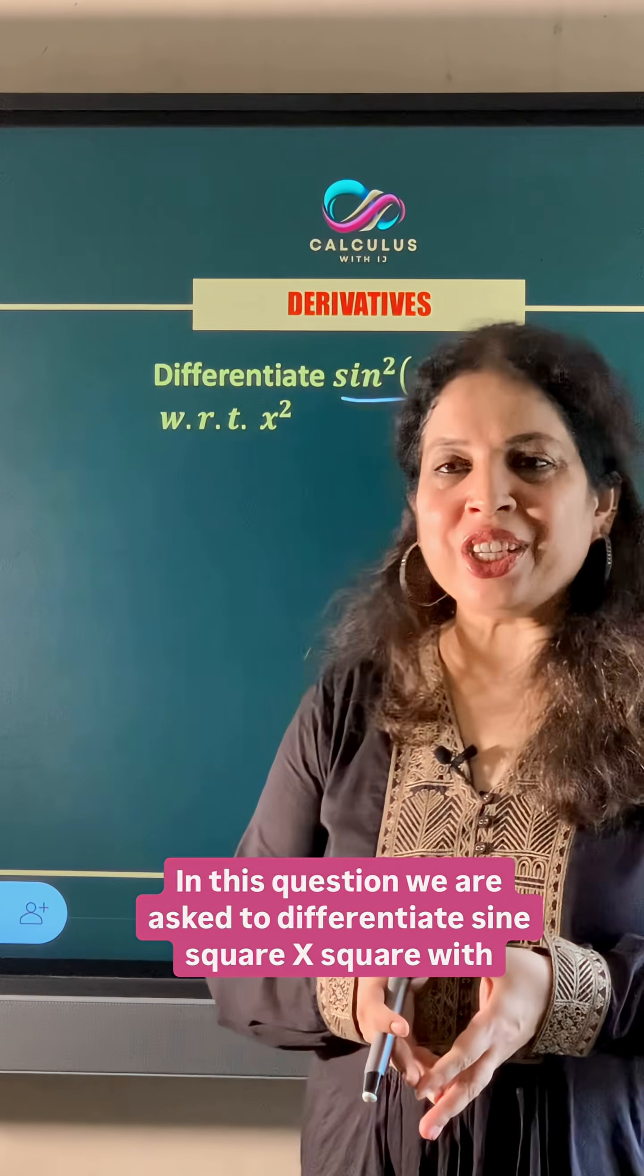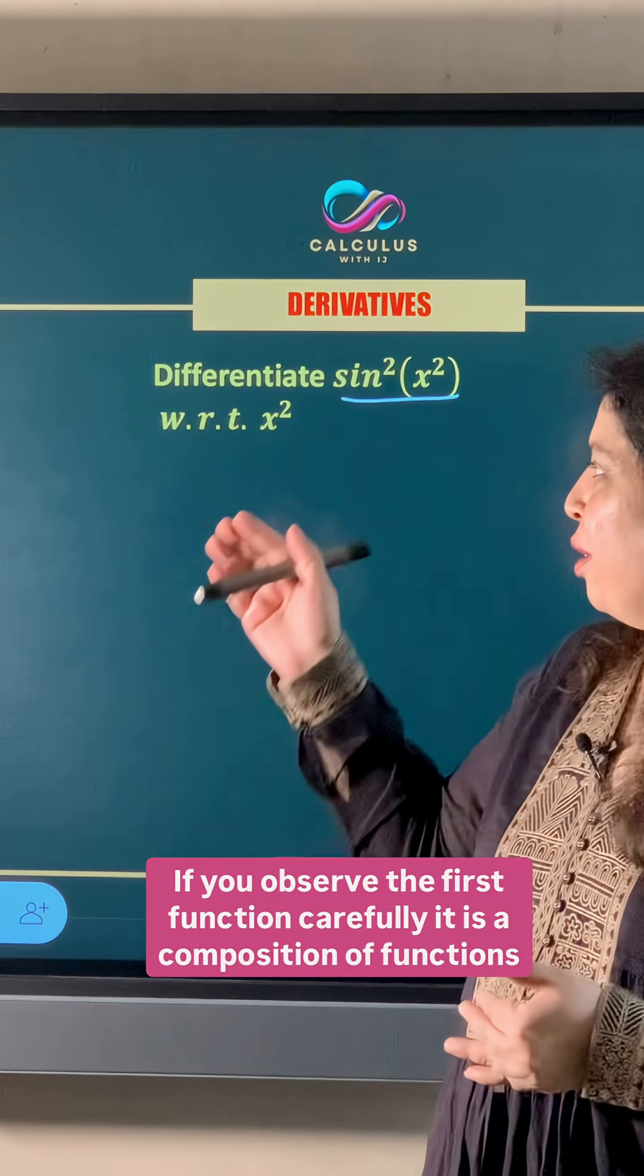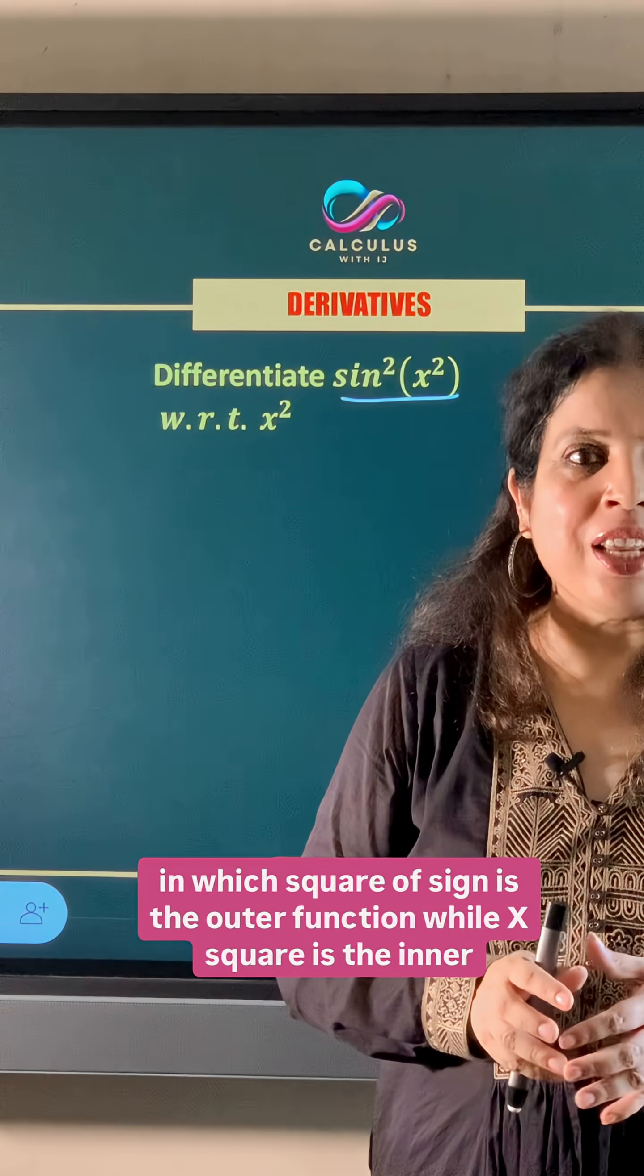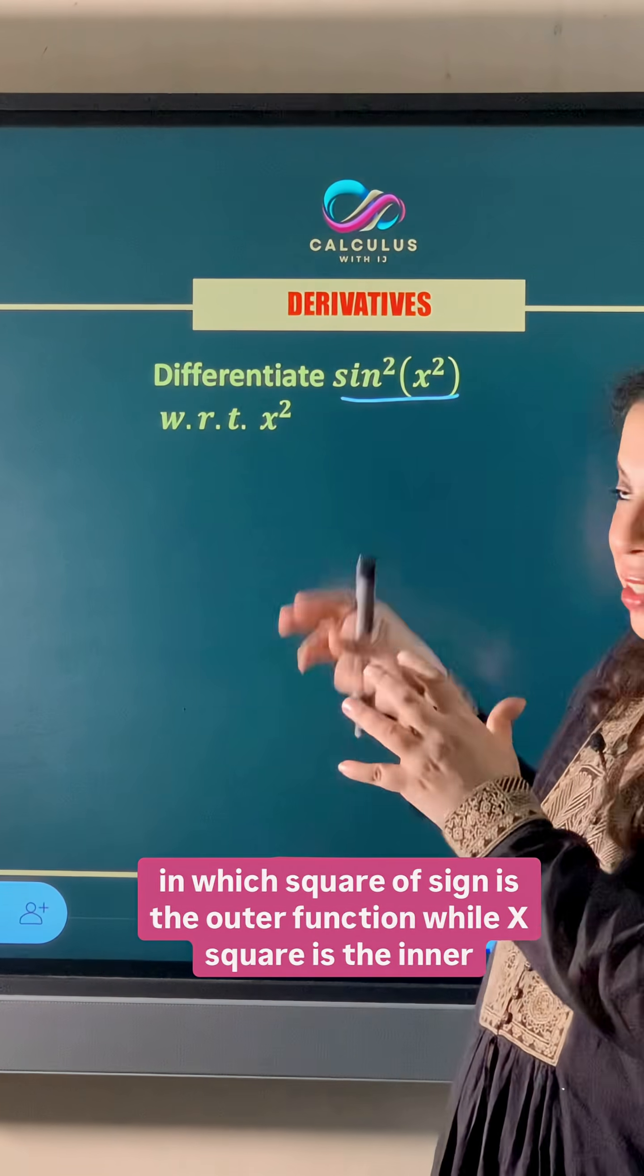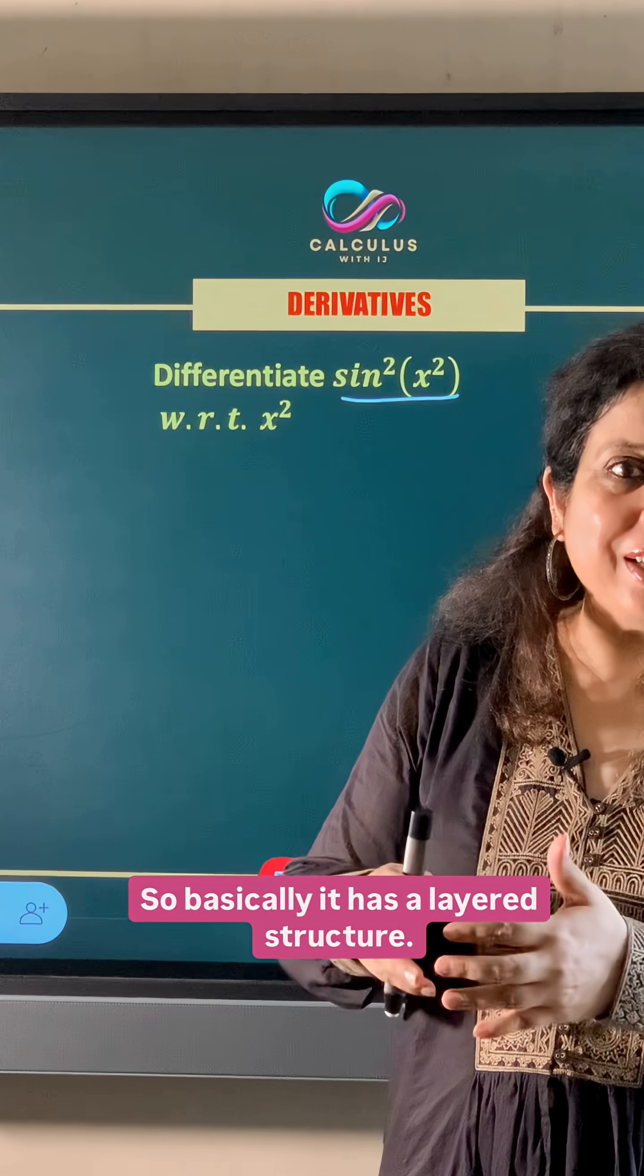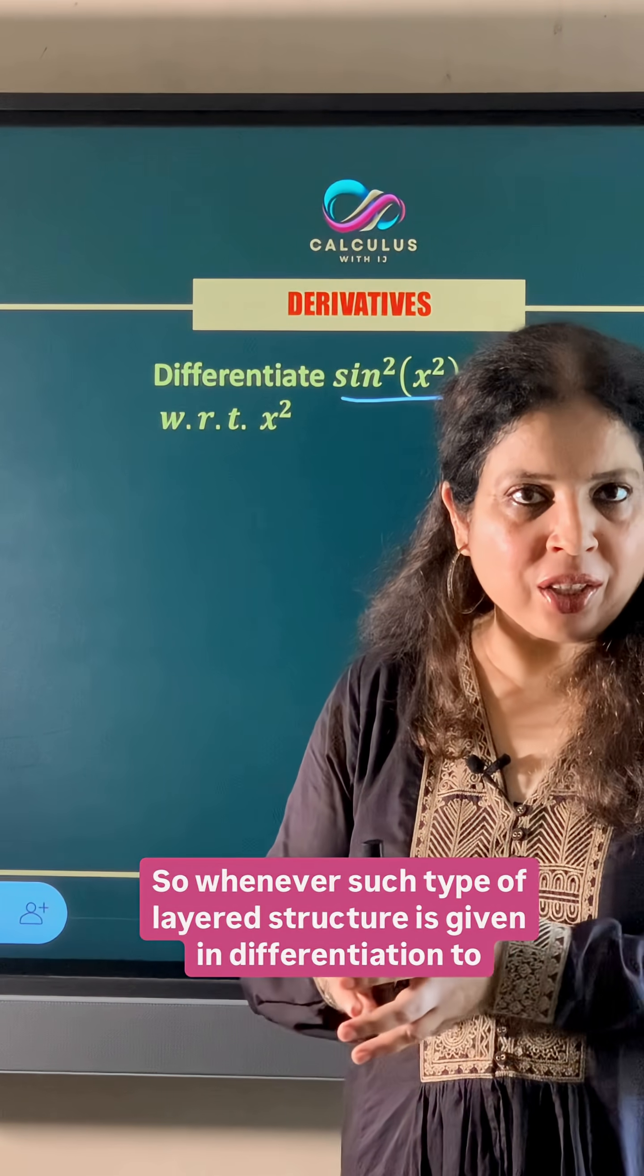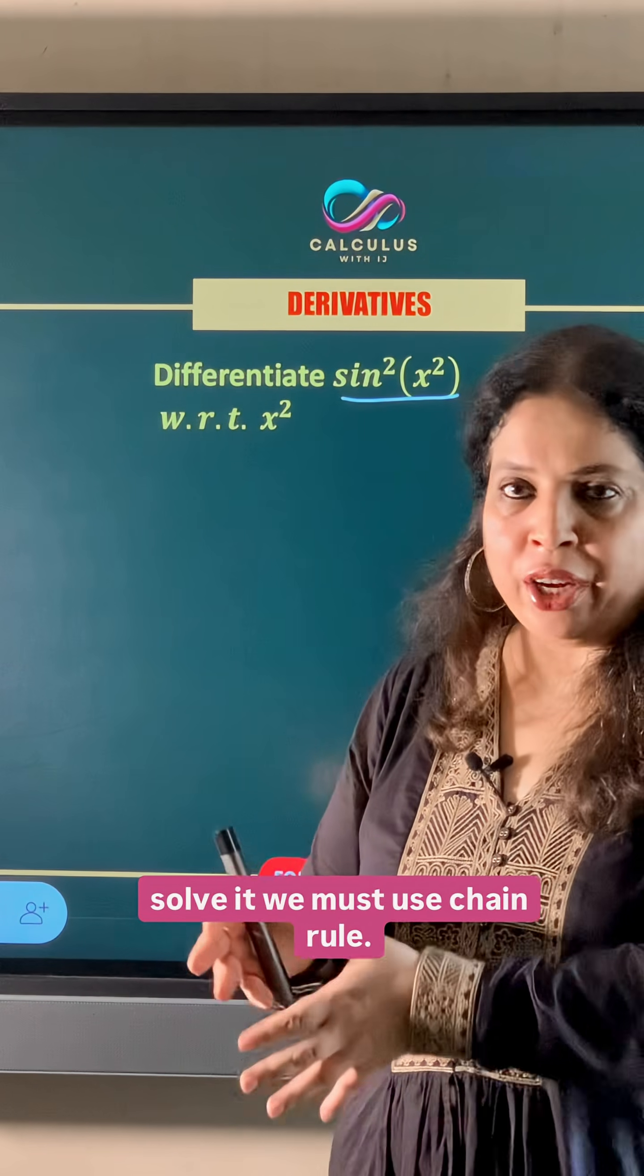In this question we are asked to differentiate sin²(x²) with respect to x². If you observe the first function carefully, it is a composition of functions in which square of sine is the outer function while x² is the inner function. So basically it has a layered structure. So whenever such type of layered structure is given in differentiation, to solve it we must use chain rule.